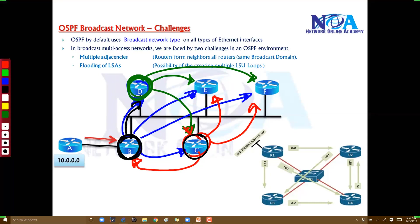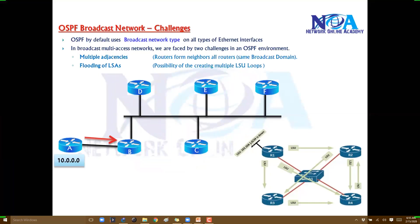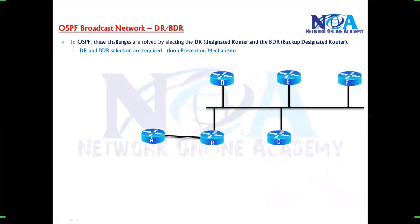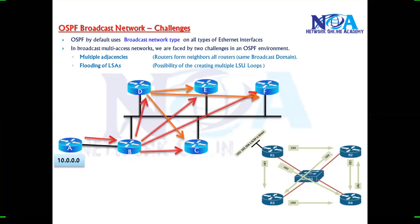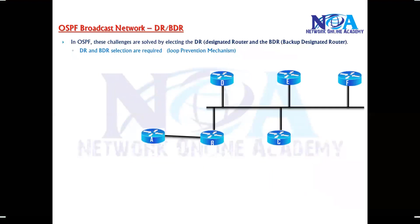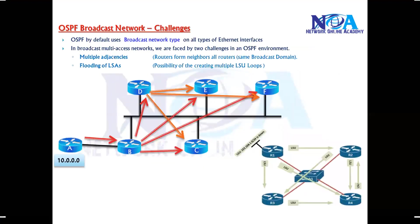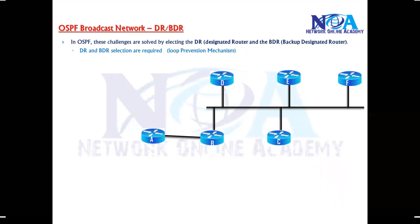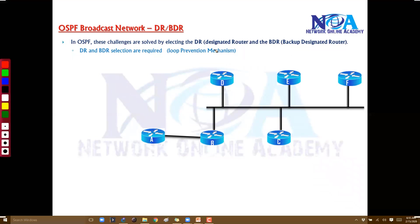This is one kind of issue you may face because every router is a neighbor of every other router, causing LSAs to flood in the network. To overcome this, OSPF broadcast networks use DR and BDR elections. DR stands for Designated Router and BDR stands for Backup Designated Router — a loop prevention mechanism to prevent those LSA loops.